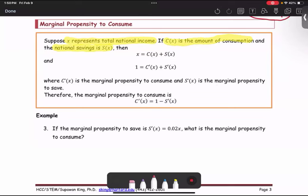Next, we're going to find the derivative of the equation. The income equals the consumption plus the savings. The derivative of X is 1.